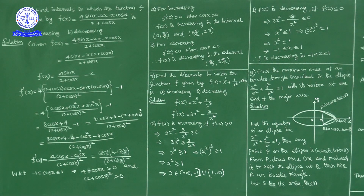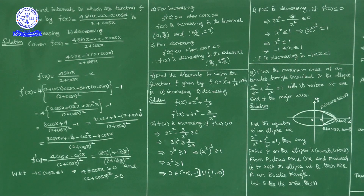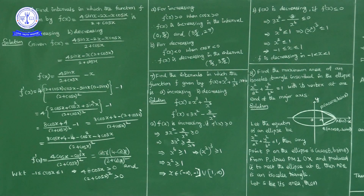Whether f'(x) is positive or negative depends on cosx. Since the range of cosx is [−1, 1], the factor (4 − cosx) is always positive. Also, (2 + cosx) ranges from 1 to 3, so (2 + cosx)² is always positive. Thus the sign of f'(x) depends entirely on cosx.